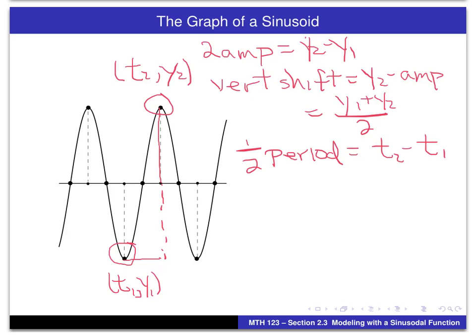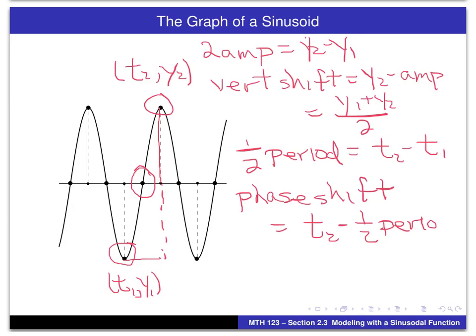The last thing we have to do is get the phase shift. If we focus on a sine function, the way I would get a phase shift is to focus on the point where it crosses the axis of the sinusoid. That is a quarter of a period back to the left of the high point, or a quarter of a period to the right of the low point. So we can get that phase shift by using that general principle — in this case, we could write that as T2 minus a quarter of the period.